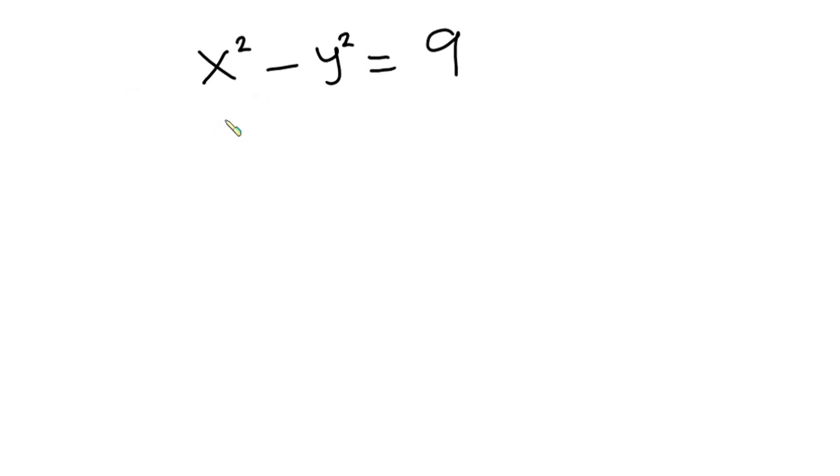If you have a squared minus b squared, this is the same as a plus b, then a minus b. Alright, so I'll just express this in the form of this. So we have x plus y, then x minus y and this is equal to 9.